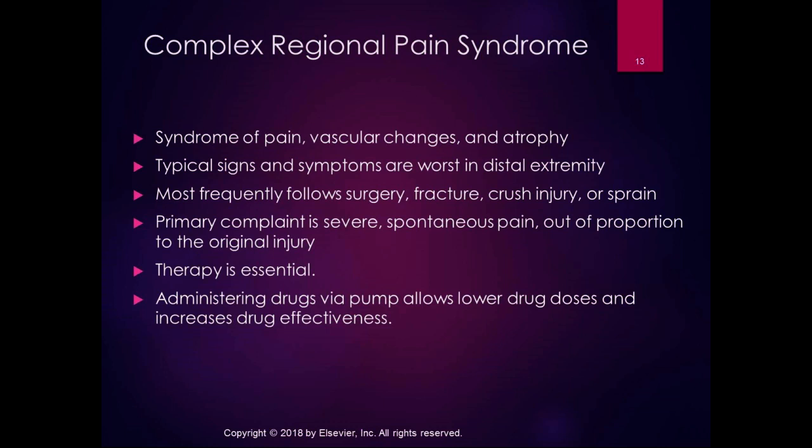The time between trauma and onset of CRPS is really variable — from hours to weeks. I've seen three people with upper extremity CRPS and several with lower extremity over the course of the last 10 years, so it's not very common. Sometimes CRPS is suspected when somebody is not getting better after surgery. The primary complaint in CRPS is spontaneous pain — severe spontaneous pain that's out of proportion with the original injury.